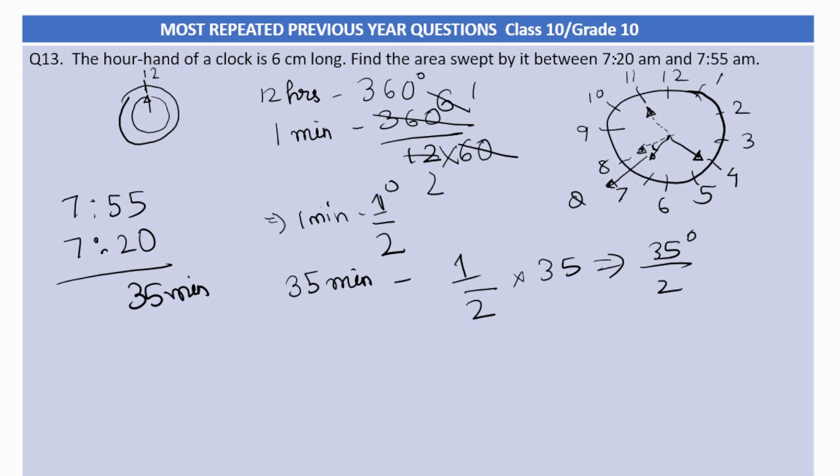Now for the area, we have to simply use area of a sector formula. What is the area formula? Theta by 360 degrees into pi r square, right. Now theta value is 35 by 2 into 360 degree, and pi value will be 22 by 7. The radius is 6 centimeter. Now 6 into 6 is 36.